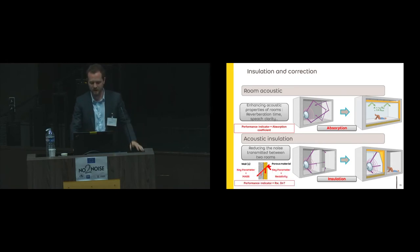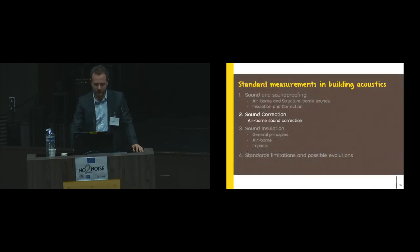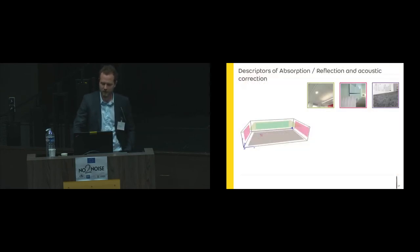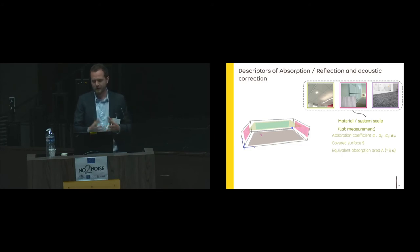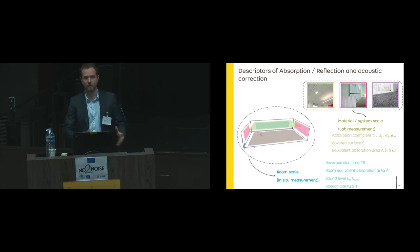I'll talk about the standard measurement of sound corrections. You have to know there are two scales—the material and system scales. You do that in lab measurements, so you deal with alpha coefficient absorption. You have a lot of declinations of alpha: alpha s, alpha w, alpha p, alpha b. You have to deal with the surface and you're able to calculate an equivalent absorption area. When you're at the room scale in situ, you're more interested in the reverberation time, the room equivalent absorptions, maybe the sound level inside. If you don't have any absorption or bad absorption like in most restaurants, you'll have a huge acoustic level that will make you talk louder, leading to more and more level. And the speech clarity, which are indicators about the clarity of the talk.